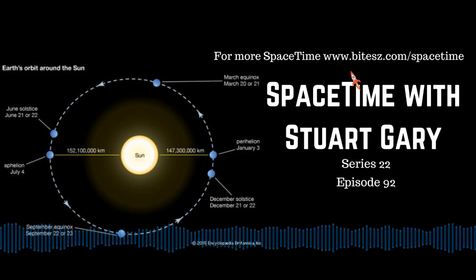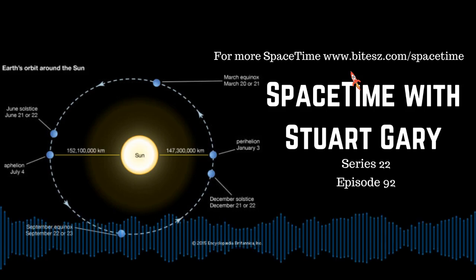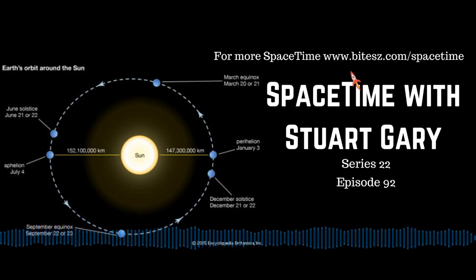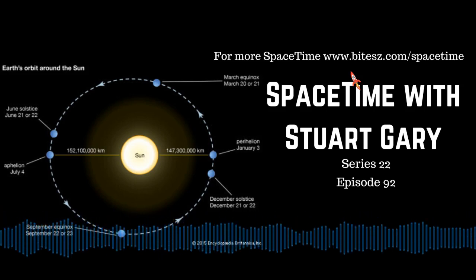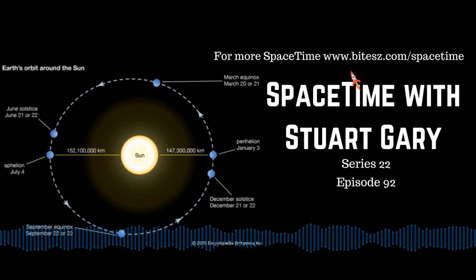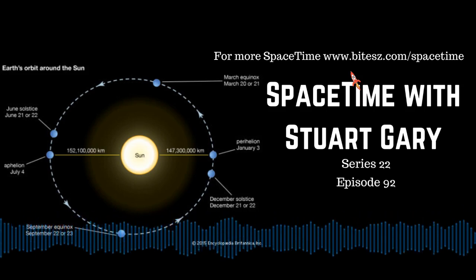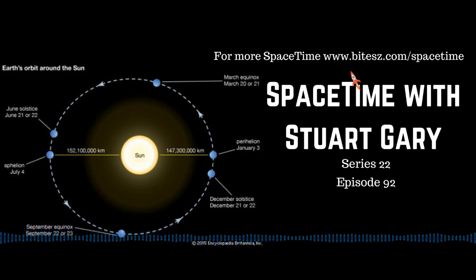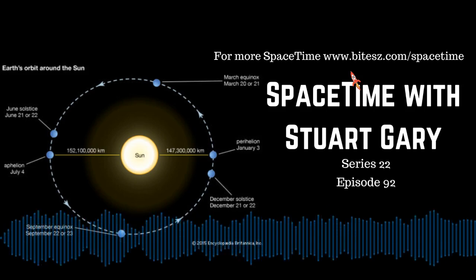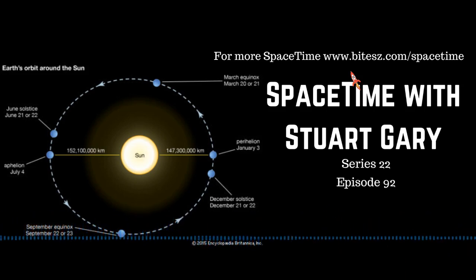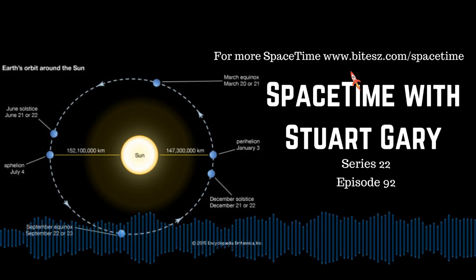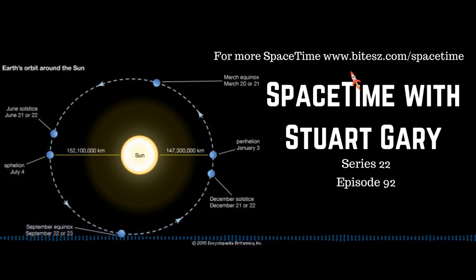Scientists have set a new upper limit for the mass of the neutrino, the most common particle in the universe. The new results indicate the neutrino must have a mass less than 1.1 electron volts.